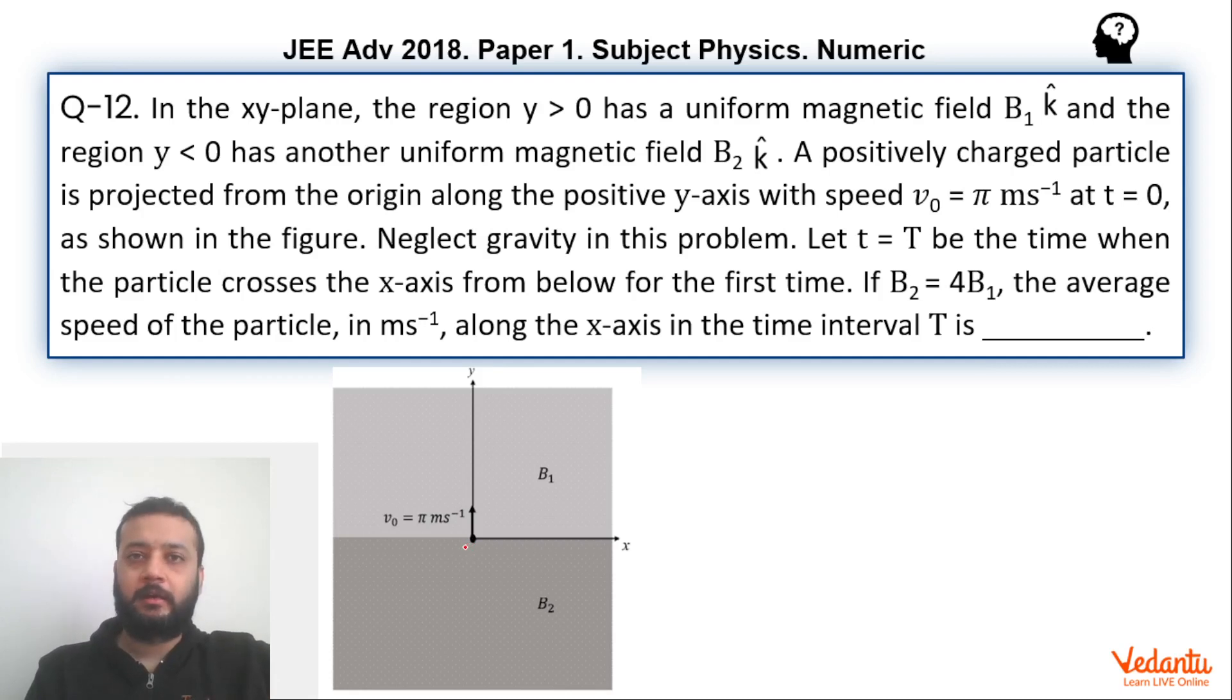Let t equals T be the time when particle crosses x-axis from below for the first time. We have to find the average speed of the particle along the x-axis in this time interval. It is very easy to see that in the upper half, particle is going to follow this kind of trajectory. Because you can see that v cross B, velocity is towards y and magnetic field is towards us, so v cross B is pointing along somewhere in this direction, and hence center of the circle is going to lie over here. When it comes down, velocity will remain the same because magnetic field cannot change the speed. But the center of the circle will be somewhere on the left side.